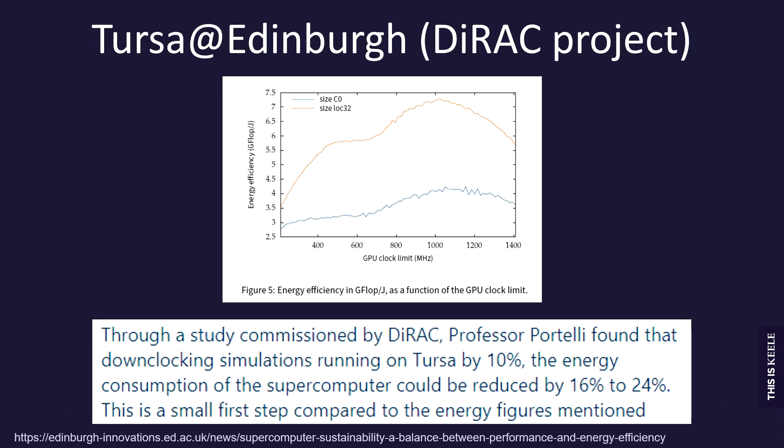Another example from Edinburgh — from Antonin Portelli in the context of DiRAC — is to vary the GPU clock speed. How does energy efficiency in flops per joule compare when you vary the GPU clock? You can often find an optimal point that is not necessarily maximum speed, nor minimum speed. They found that if you only reduce performance by 10%, you can reduce energy consumption by significantly more.